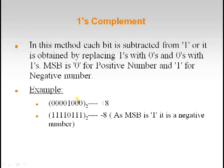Positive numbers are represented as-is with MSB 0. To represent a negative number in 1's complement, 0s are replaced with 1s and 1s are replaced with 0s. As you can see, the MSB becomes 1 indicating a negative value. The quantity here represents 8, and as MSB is 1 it is a negative number.